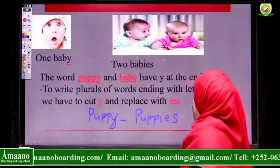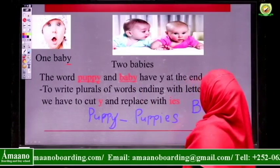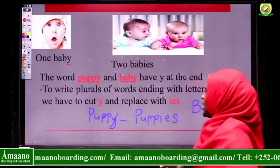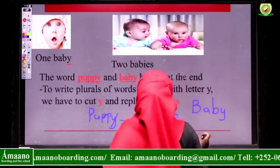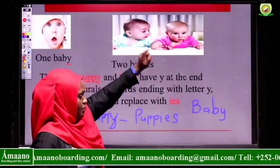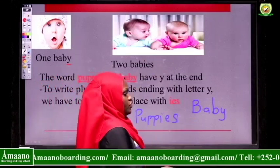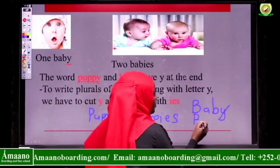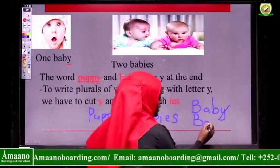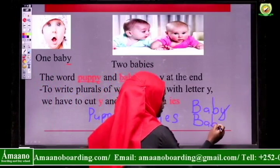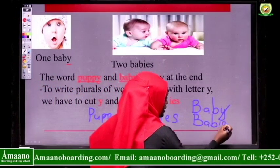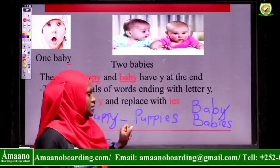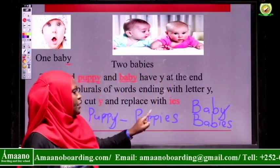We have the word baby. The word baby is ending with letter Y. So what do we do to write the plural of this word? We have to remove letter Y, then copy the remaining letters — that is b-a-b — then add I-E-S. So baby becomes babies. Puppy, puppies.